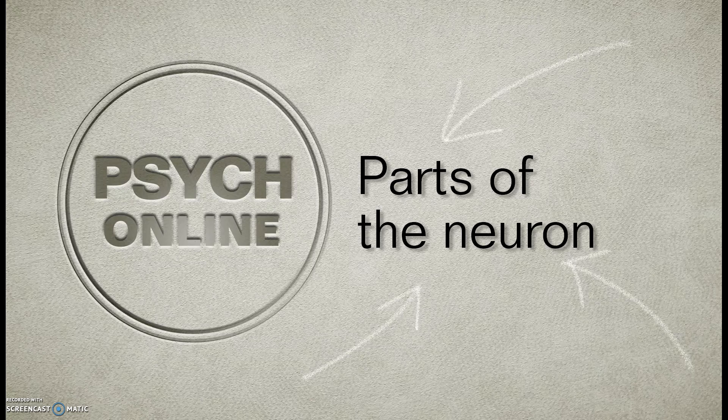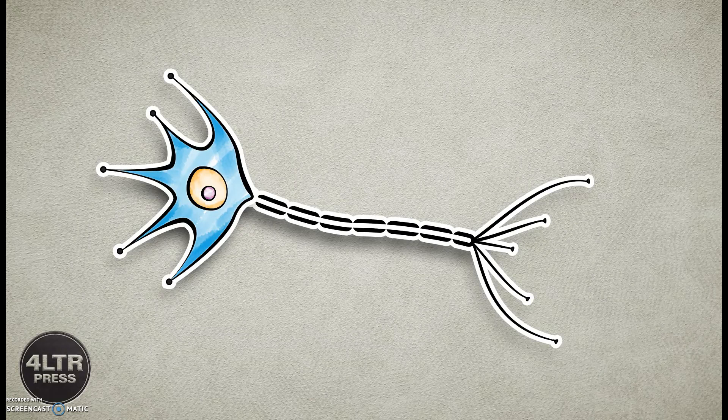A typical neuron consists of three main parts: dendrites, the cell body, and the axon.